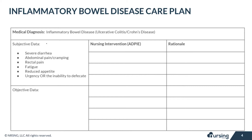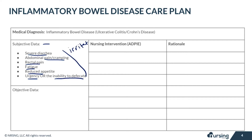The subjective data you might see in your patient includes severe diarrhea, abdominal cramping and pain, rectal pain, fatigue, a reduced appetite, urgency, or the inability to defecate. All of these symptoms are due to the inflammation and irritation in the bowels.